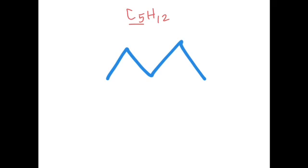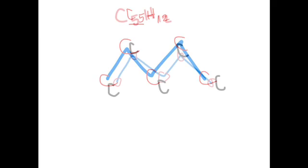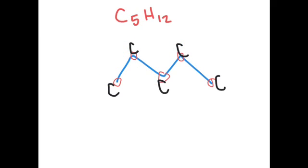You may be wondering, what about the hydrogen? Since each point shows the carbon and its bonds, all unshown bonds are to hydrogen. We can also assume that at each point where the carbons are, there are four bonds to each carbon, unless charged.